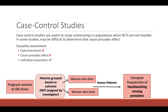Case control studies are useful to study relationships when RCTs aren't feasible. However, in some studies it might be difficult to determine that cause precedes effect. Reviewing the causality assessment: is there experimentation? No, we're not intervening. Can we ensure that cause precedes effect? No, but we can look at individual associations. Plugging our Semmelweis scenario into this flow chart, our sample is pregnant women at OB clinics. We group patients based on outcome — women who died and women who lived — then compare frequencies of hand washing among providers.